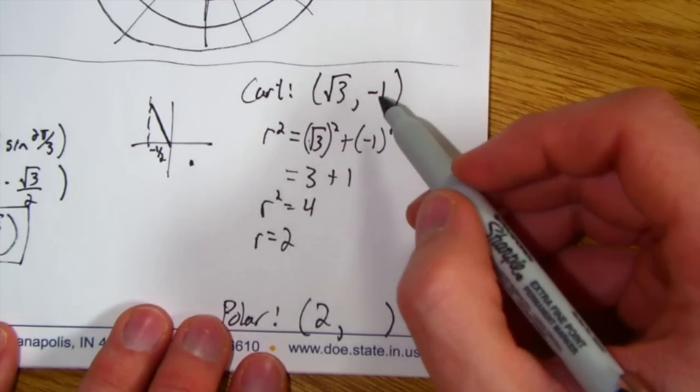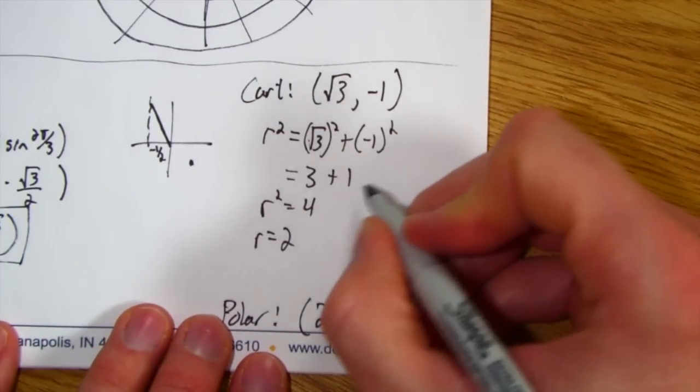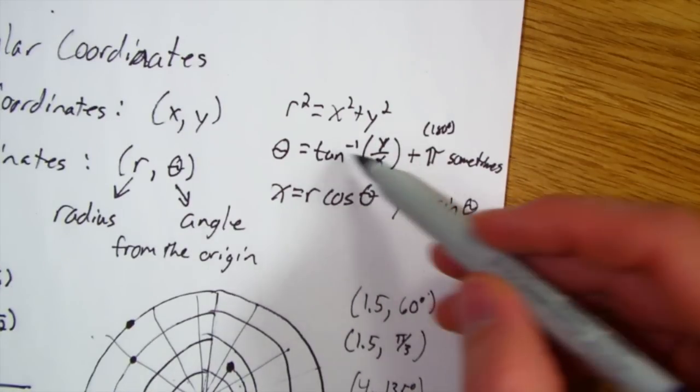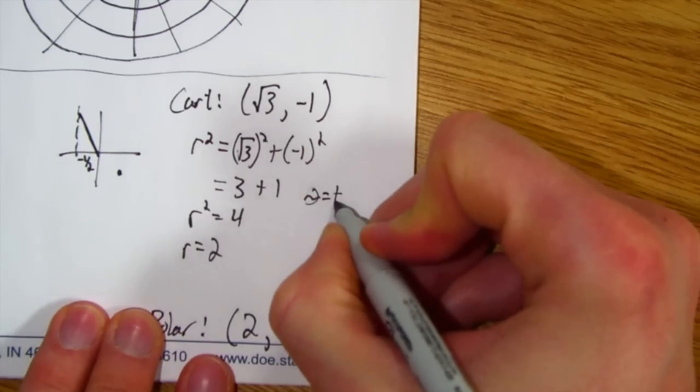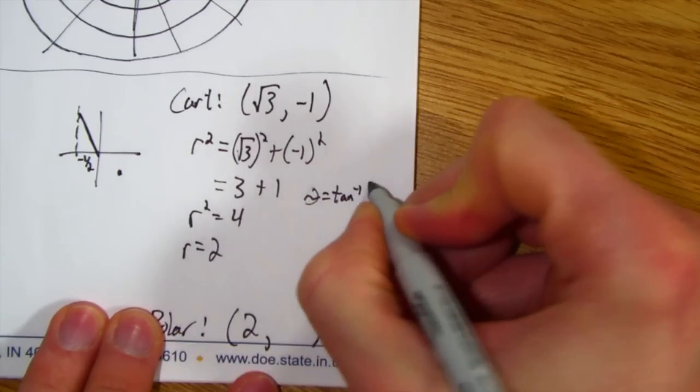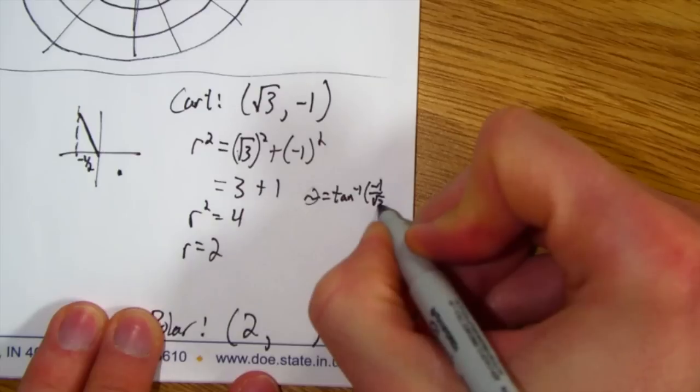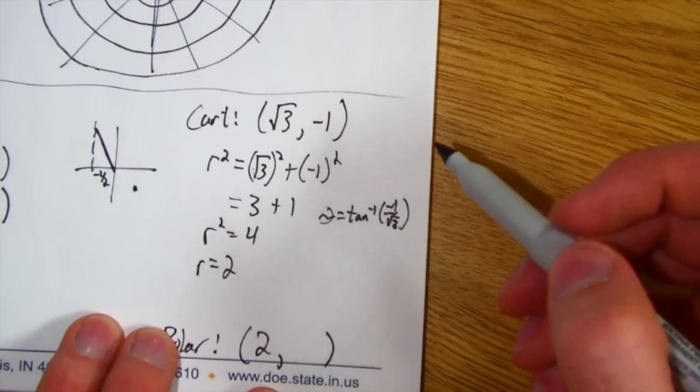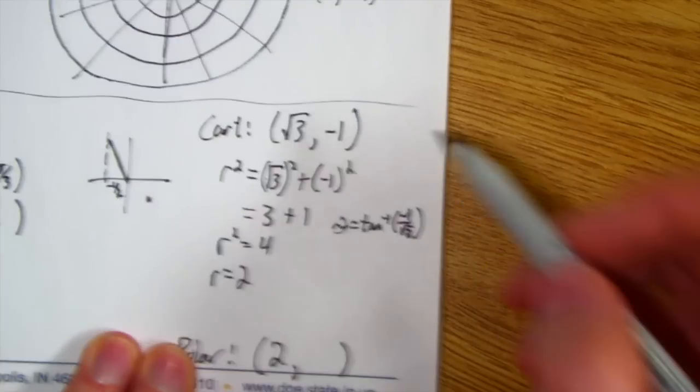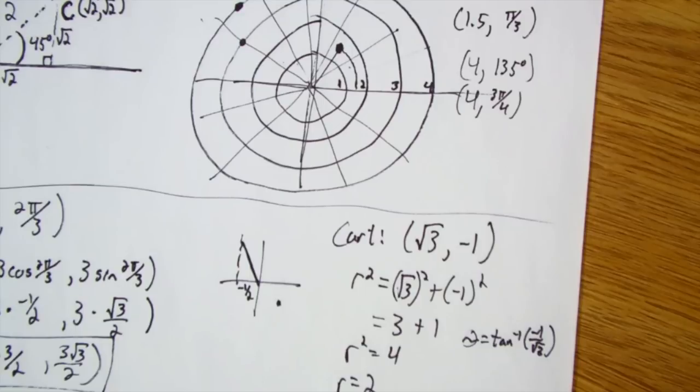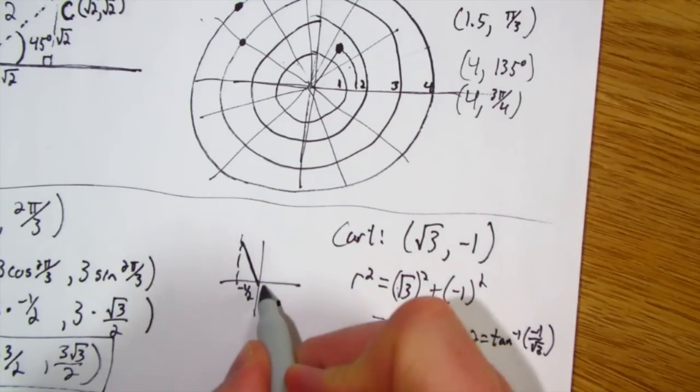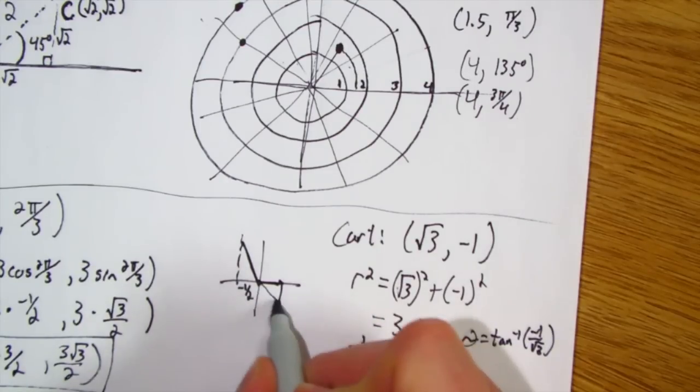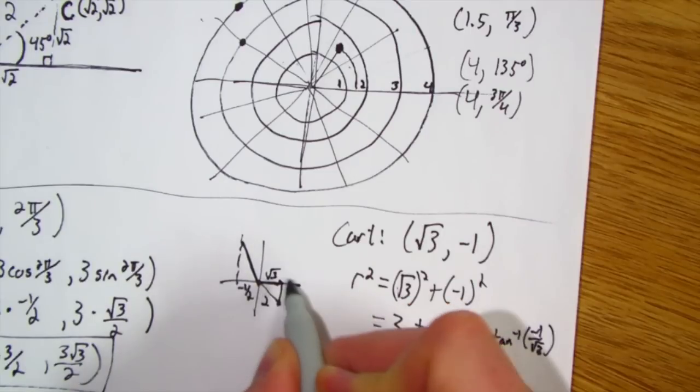Now, I need to find θ. Based on our formula that we wrote down up here, I need to do inverse tangent of y over x. So inverse tangent of negative 1 over √3. I'm going to put that in my calculator. When I put that in my calculator, I'm going to get, and I know this because of the system here, this is √3 and this is negative 1. And then we found that the radius is 2.